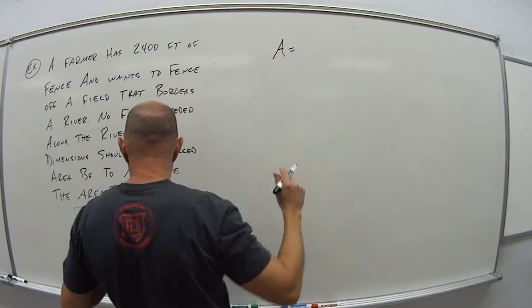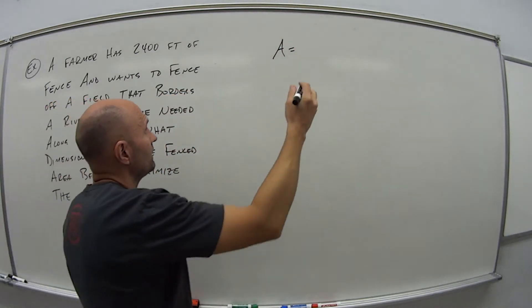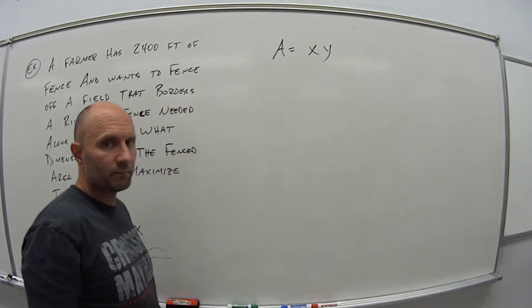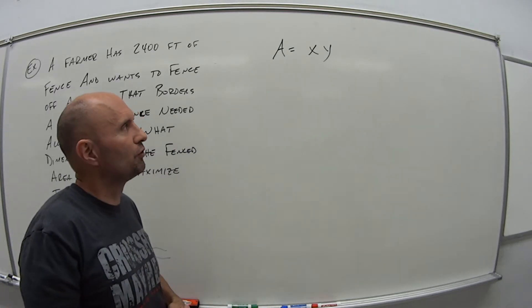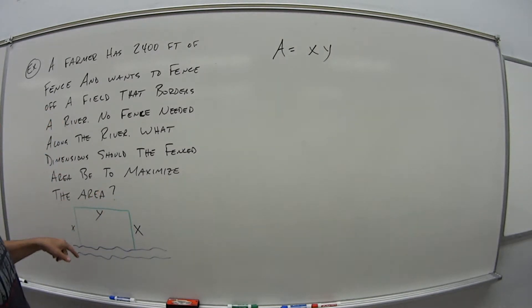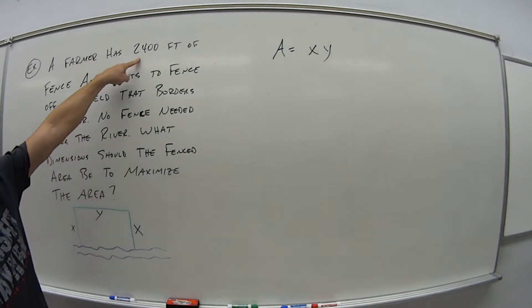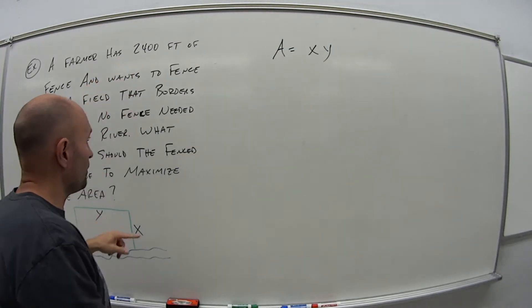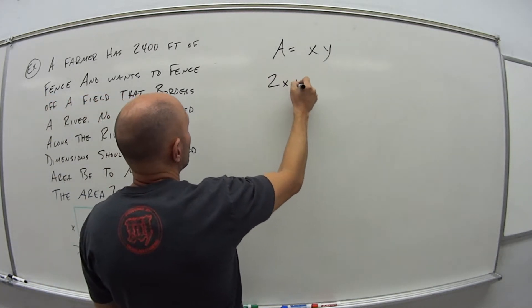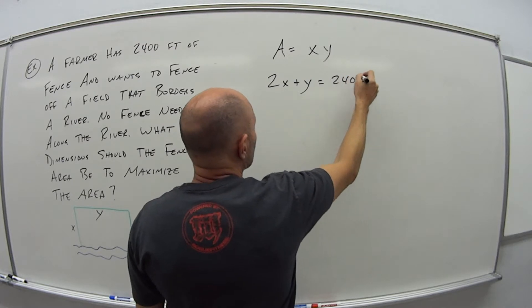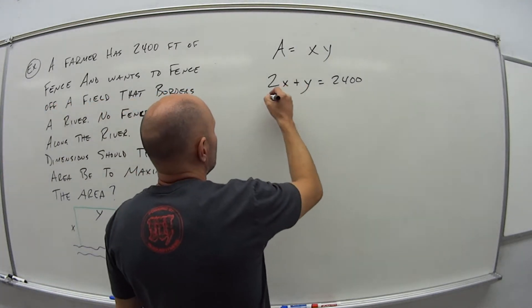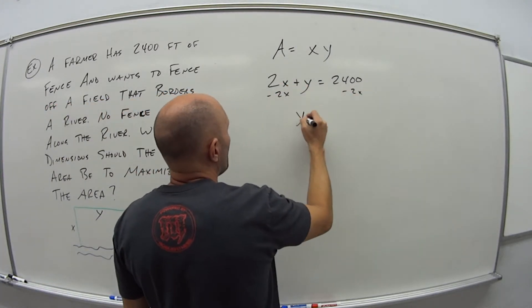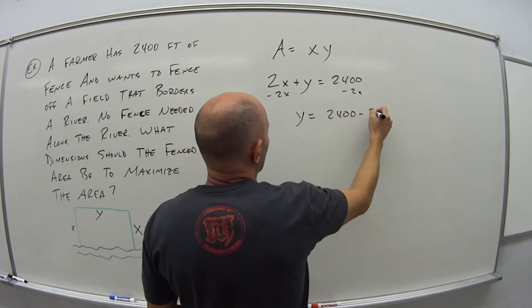So I have this picture, and then start with some equations. Well, area is what? Area is length times width. So area is x times y. But as I mentioned, we want one equation with one unknown so that we can take the derivative of that. So what's another equation I can get off of the information I was given? Well, I know what? x plus x plus y is a total length of 2,400. So 2x, x plus x is 2x, plus y is 2,400.